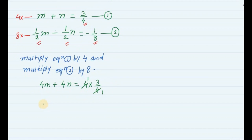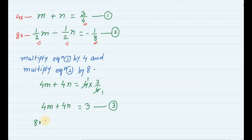After substitution and multiplying equation 1 by 4, we get equation number 3: 4m plus 4n is equal to 3. Multiplying equation 2 by 8: 8 into (1 by 2)m minus 8 into (1 by 2)n is equal to 8 into minus 1 by 8.